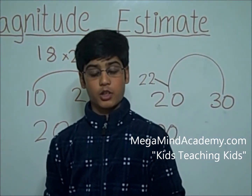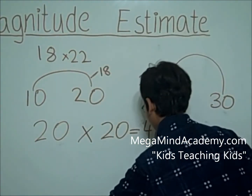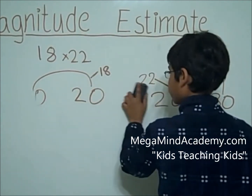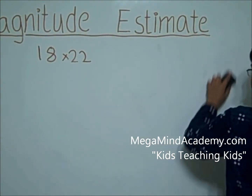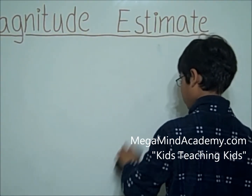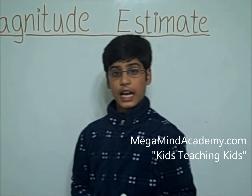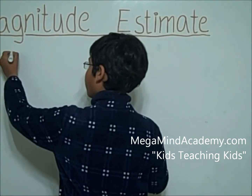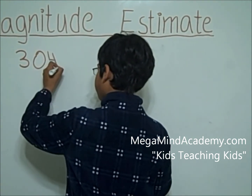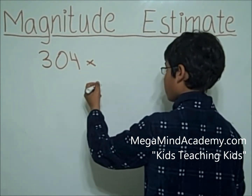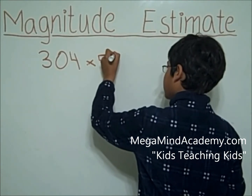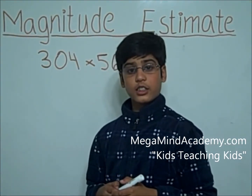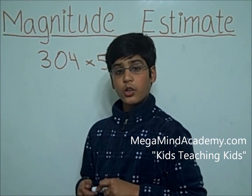Now let's look at another example of a magnitude estimate. This time let's say our problem is 304 times 56. So let's make a magnitude estimate. We're going to round to the nearest tens.